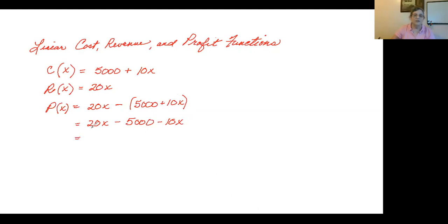So you're actually making a profit of 20x minus 10x, which would be $10 per unit, minus the $5,000 in fixed costs.